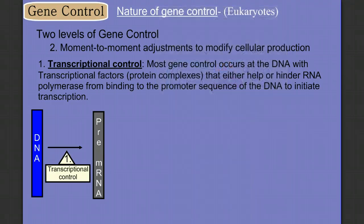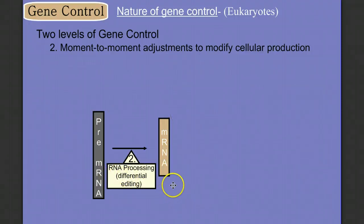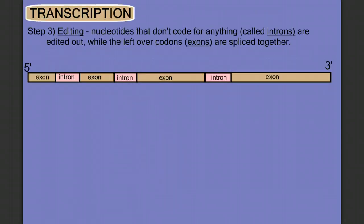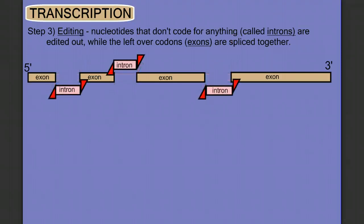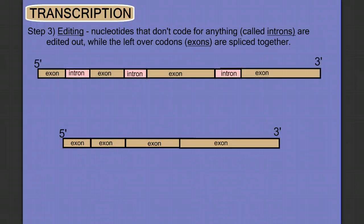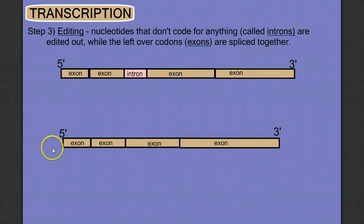The next place where we can exert gene control is RNA processing, or differential editing. After we've made our pre-mRNA, we edit it down by cutting out the introns and splicing together the exons. But different signals can cause us to do this differently. For example, we might leave in an intron, and when we splice together the remaining parts, we get a different version of the messenger RNA. So from one primary transcript, we can have two different mature messenger RNAs that might leave the nucleus.